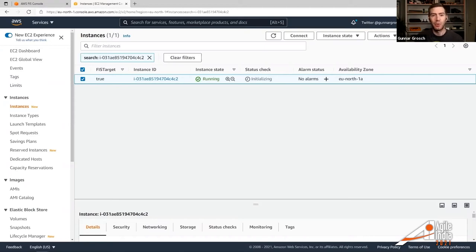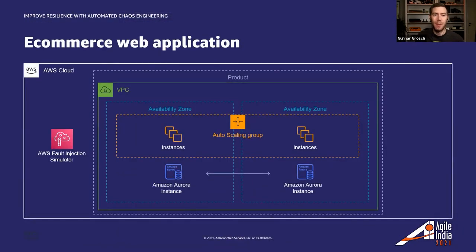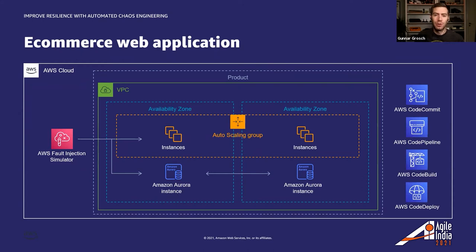That's a quick example of how we use chaos engineering experiments — to verify our system can handle single instances being stopped within our autoscaling group. We need to verify it didn't impact users by using monitoring and observability, using that steady state I mentioned earlier. So we had AWS Fault Injection running experiments. But besides that, my team is also using good practices for deploying to our service — we're using CI/CD, continuous integration and continuous delivery, which encourages frequent deployments that are less likely to break.